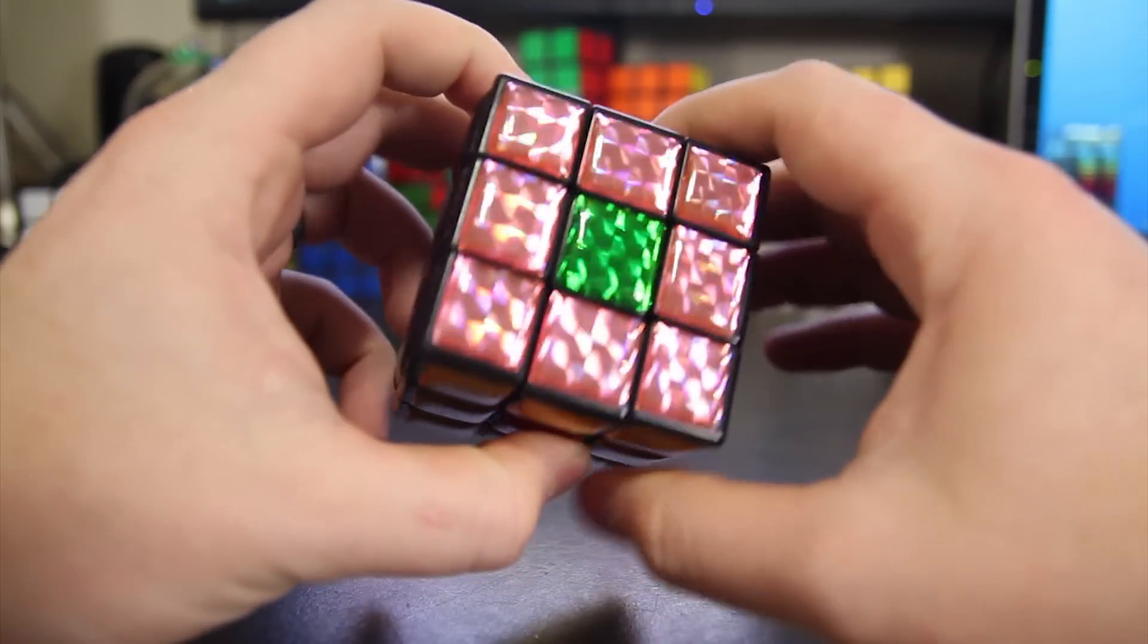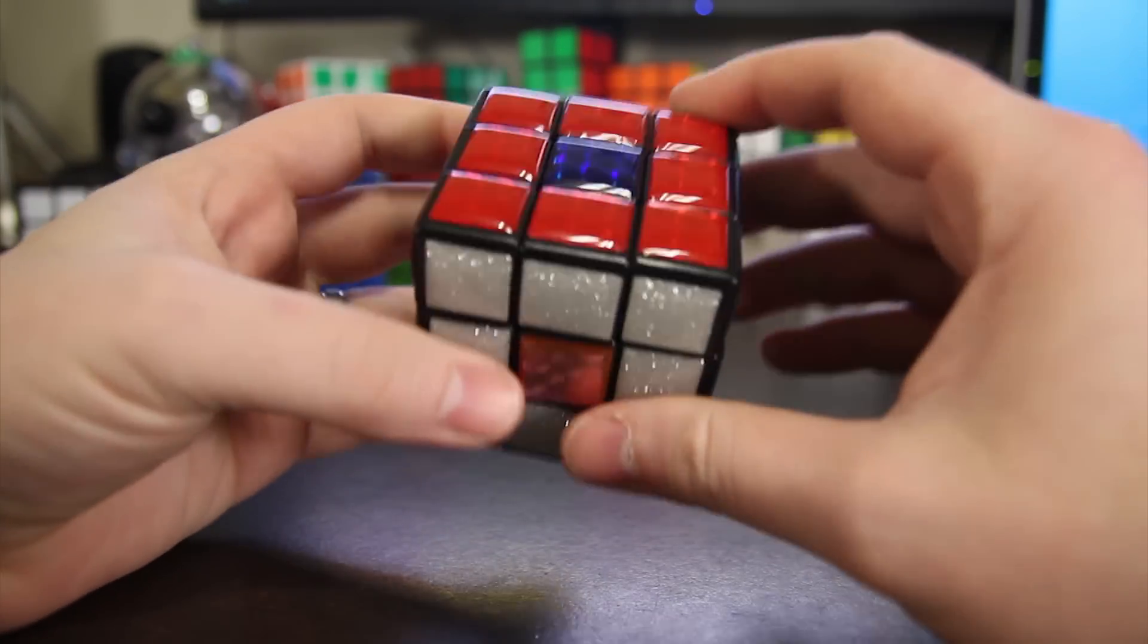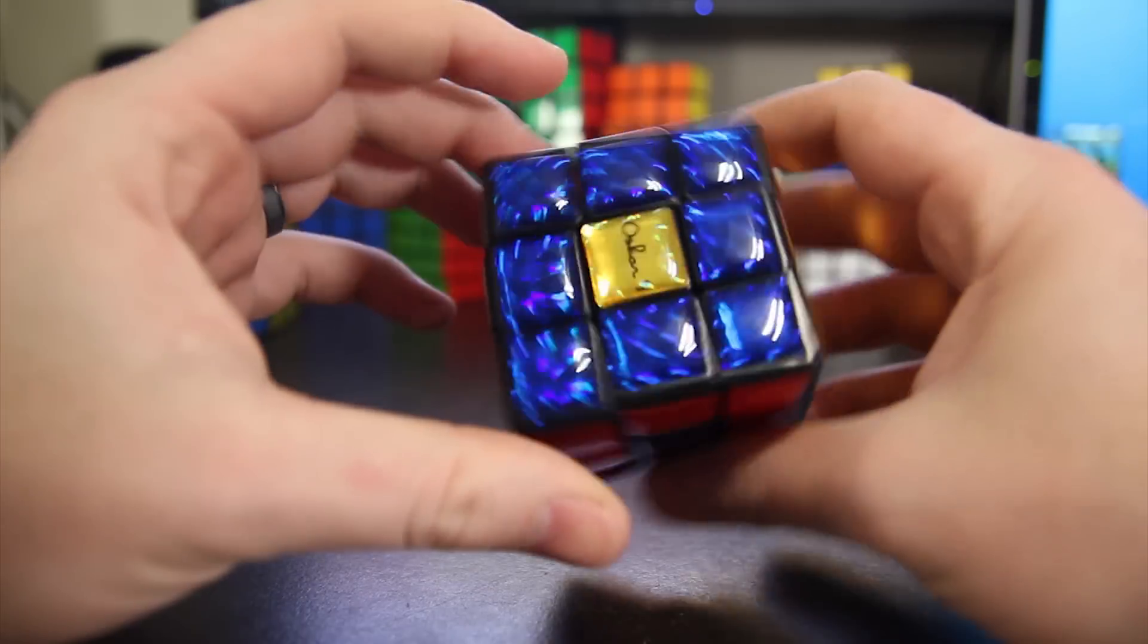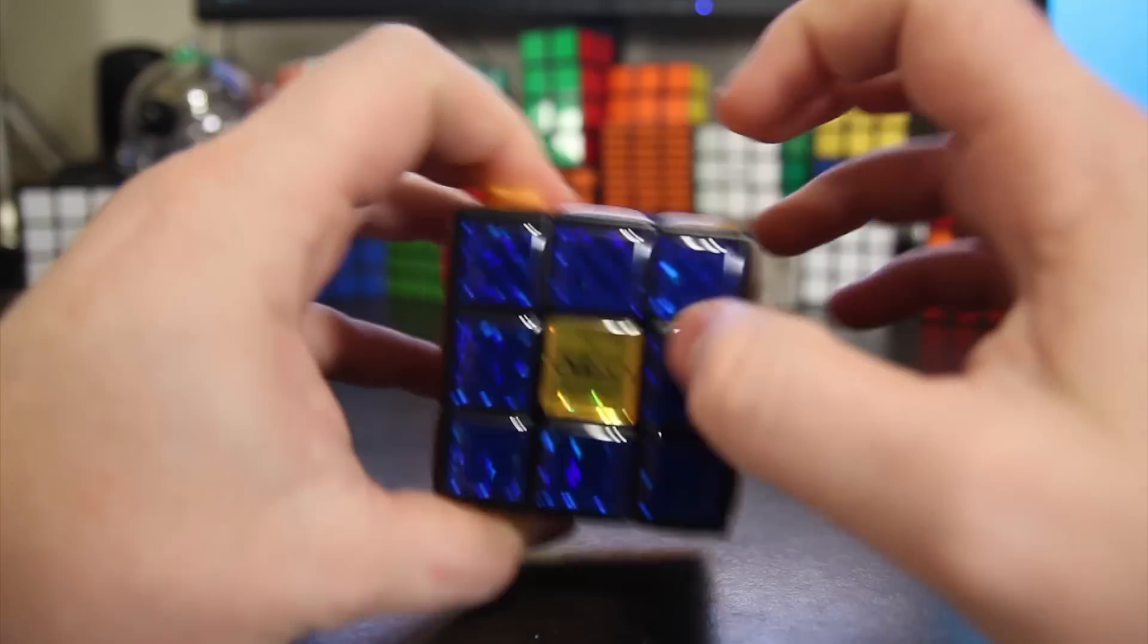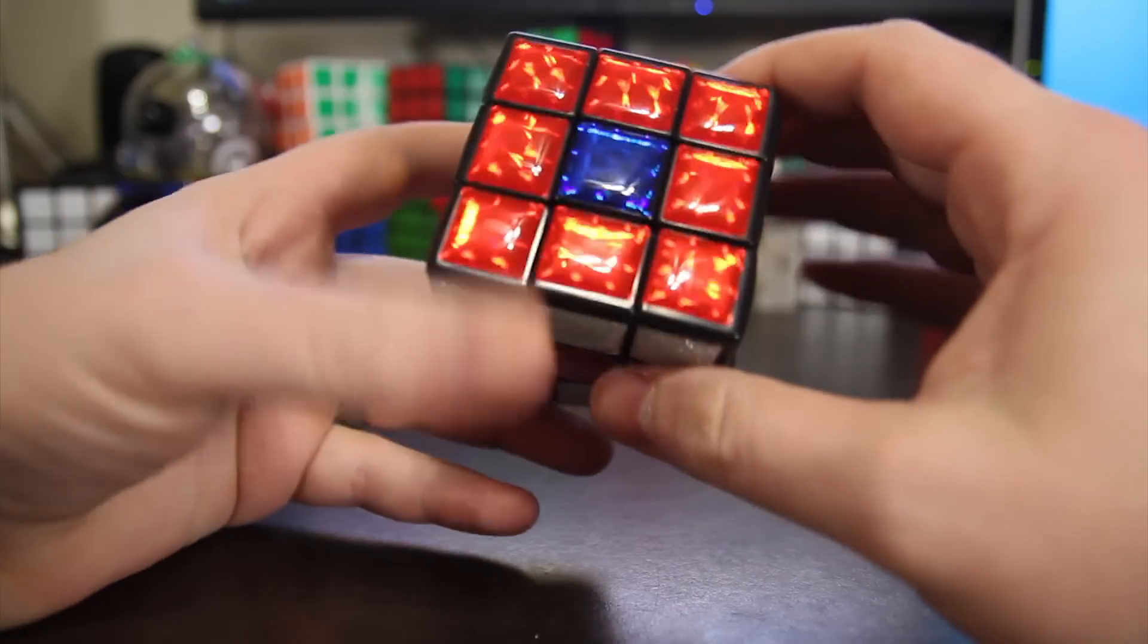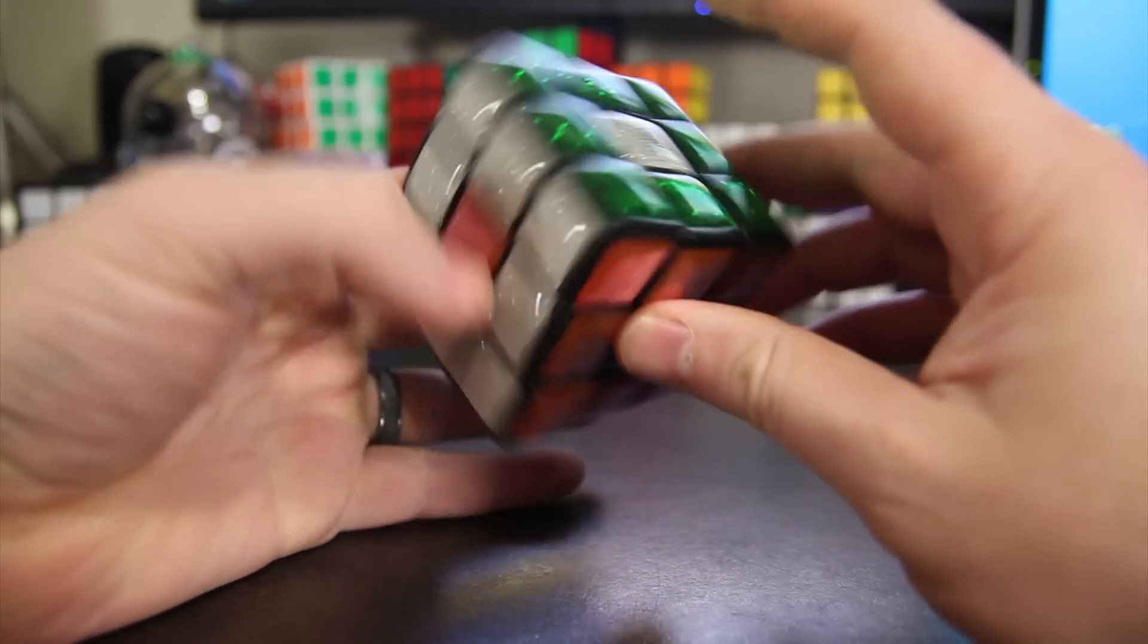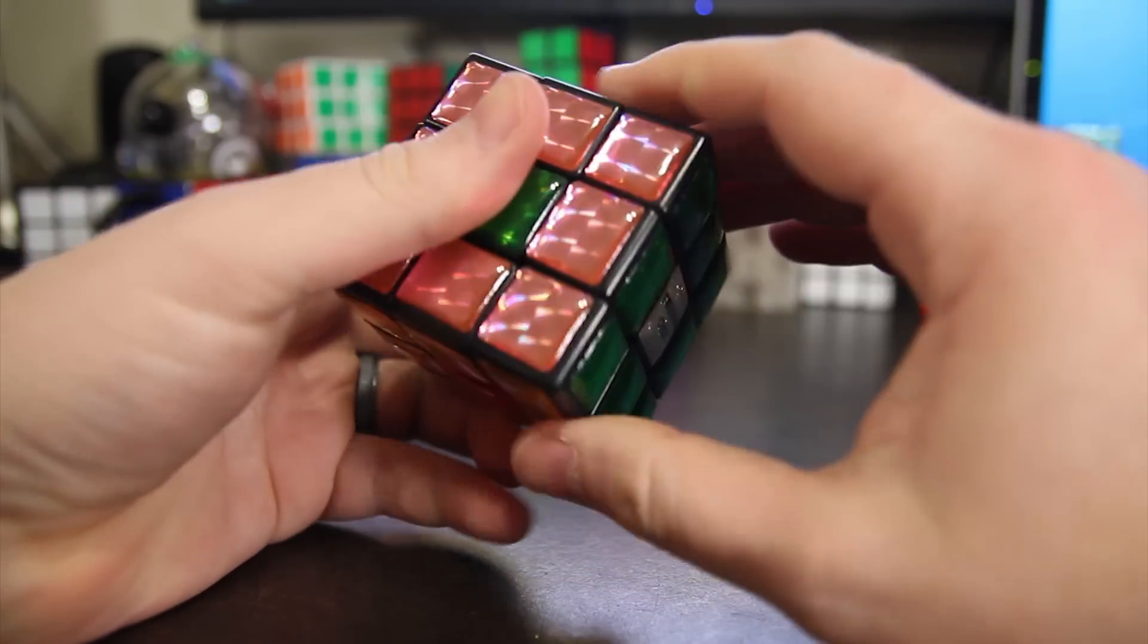Here is the Oscar treasure chest, made by Mefferts, mass-produced by them, designed by Oscar. All it is is a Rubik's Cube except you can see they put these kind of jeweled tiles on it, which actually look okay.